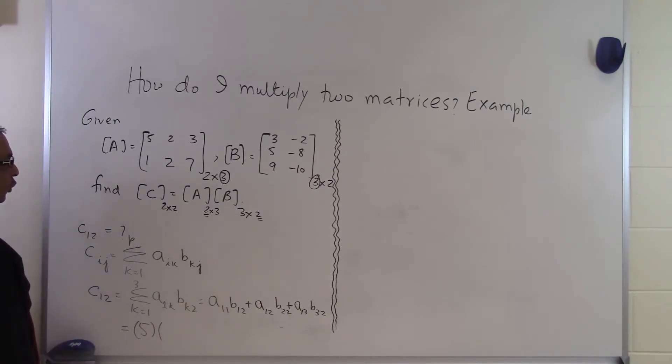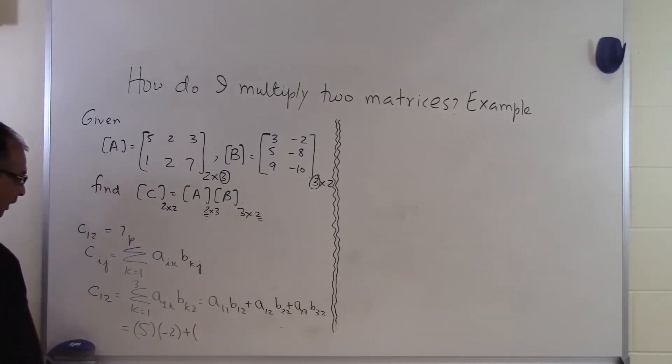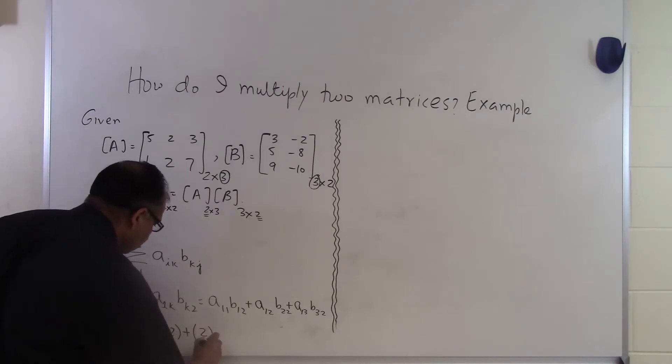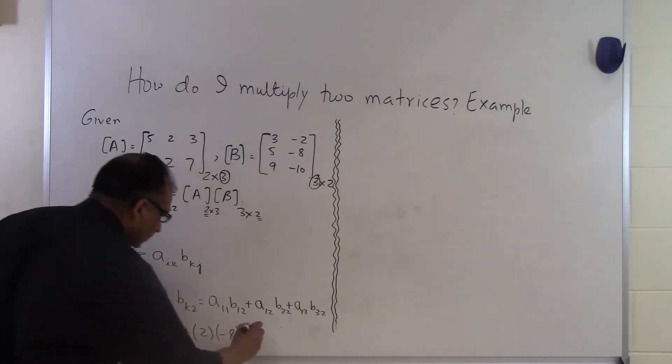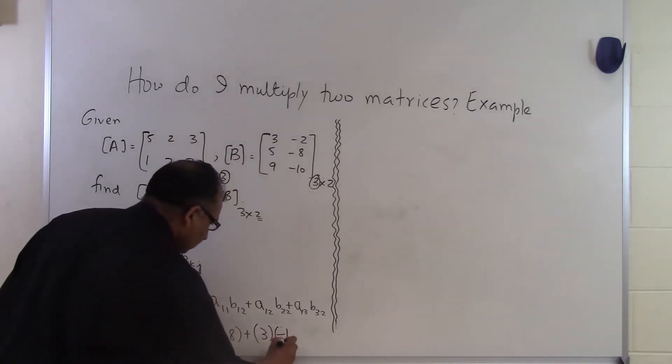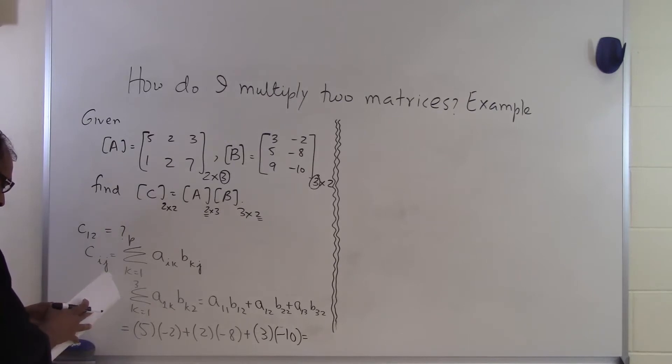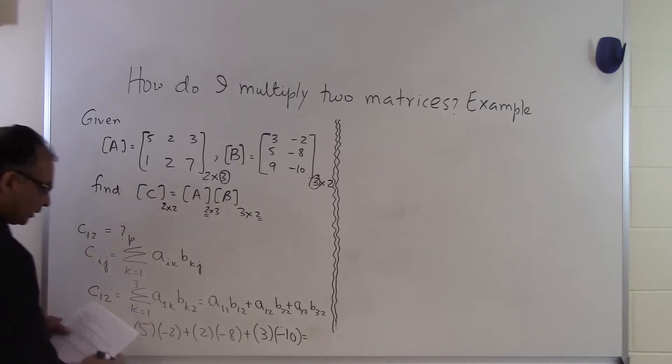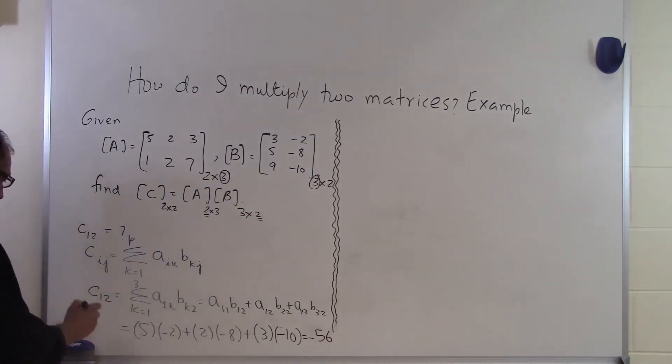B₁₂ is first row, second column, which is minus 2 plus A₁₂ is 2 and B₂₂ is minus 8 and A₁₃ is 3 and B₃₂ is minus 10. So this value here once you do the summation you will get minus 56. So that's the value of C₁₂.